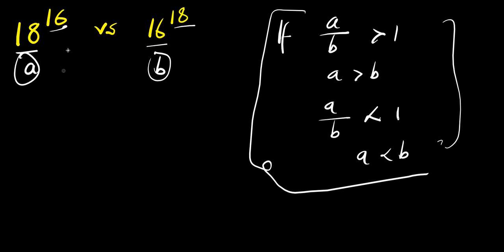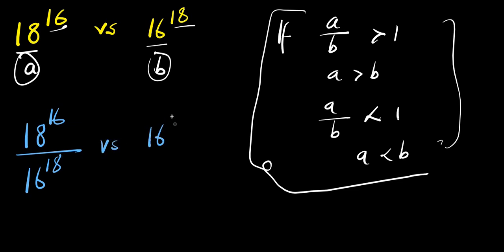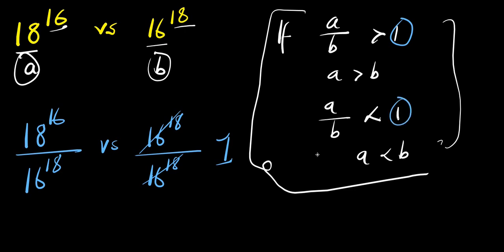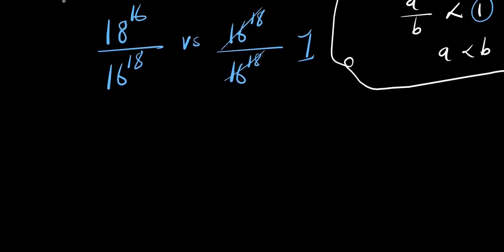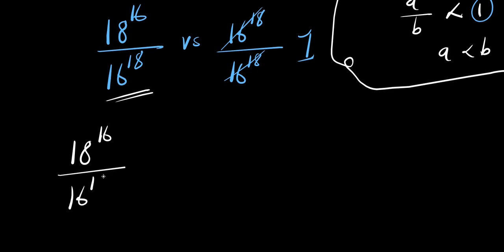Let's start by dividing A by B. So we have 18^16 divided by 16^18, and we compare this against 16^18 divided by 16^18, which equals 1. We are going to concentrate on simplifying 18^16 divided by 16^18.